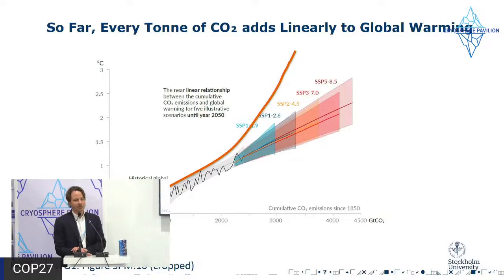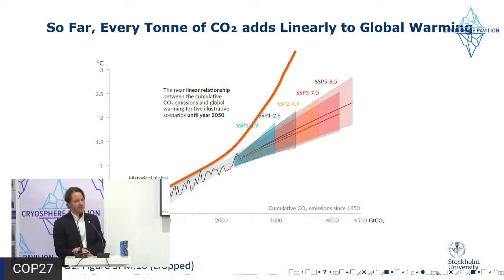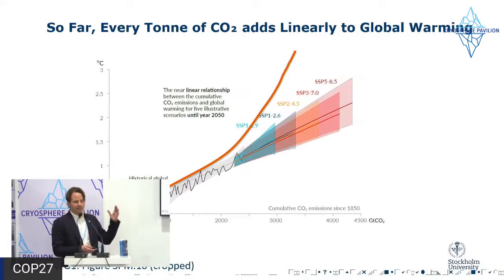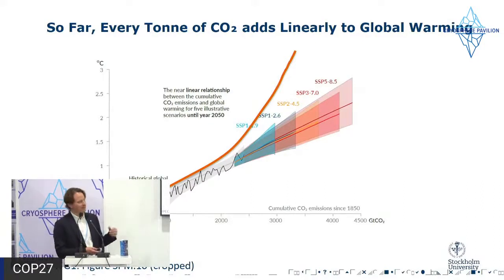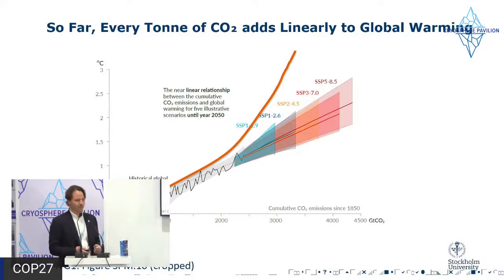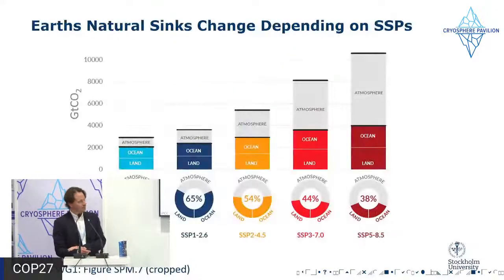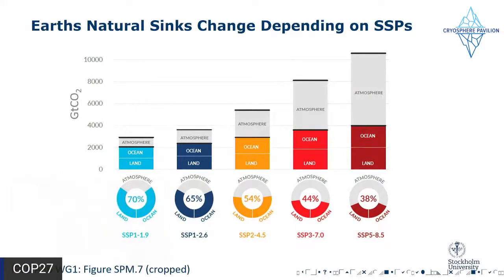Up to 2050, this relationship is pretty linear — there's some divergence between different SSPs but not much. The concern when discussing tipping points is that instead of a linear future we would move into something like rapid, irreversible acceleration of emissions due to natural feedbacks in the system.